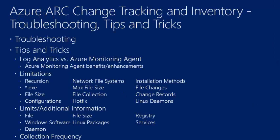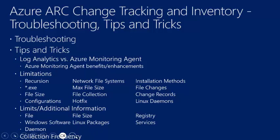Other limits to be aware of: for files, 500 is the limit. File tracking for both Windows and Linux uses MD5 hashes to detect if changes have been made since the last inventory. You can also view file content as I showed you. File size limit is 5 megabytes. Registry: 250 entries. Windows software: 250, not including software updates. Linux packages: 1,250. Daemons: 250. Windows services: 50. We document all the different areas of collection frequency, so take a look if that's of interest.